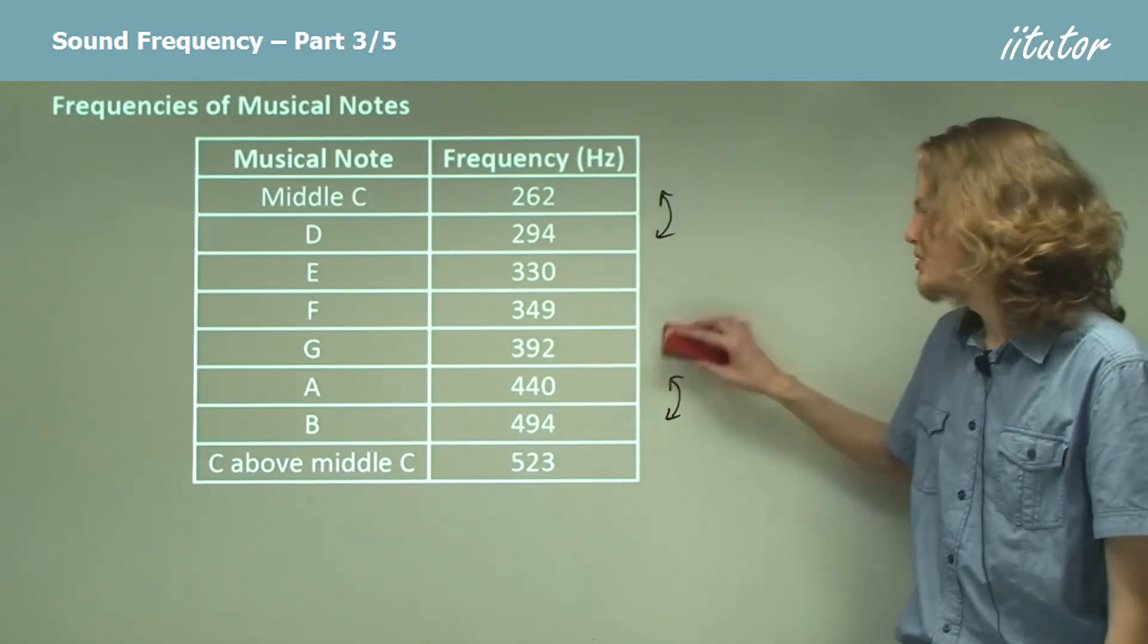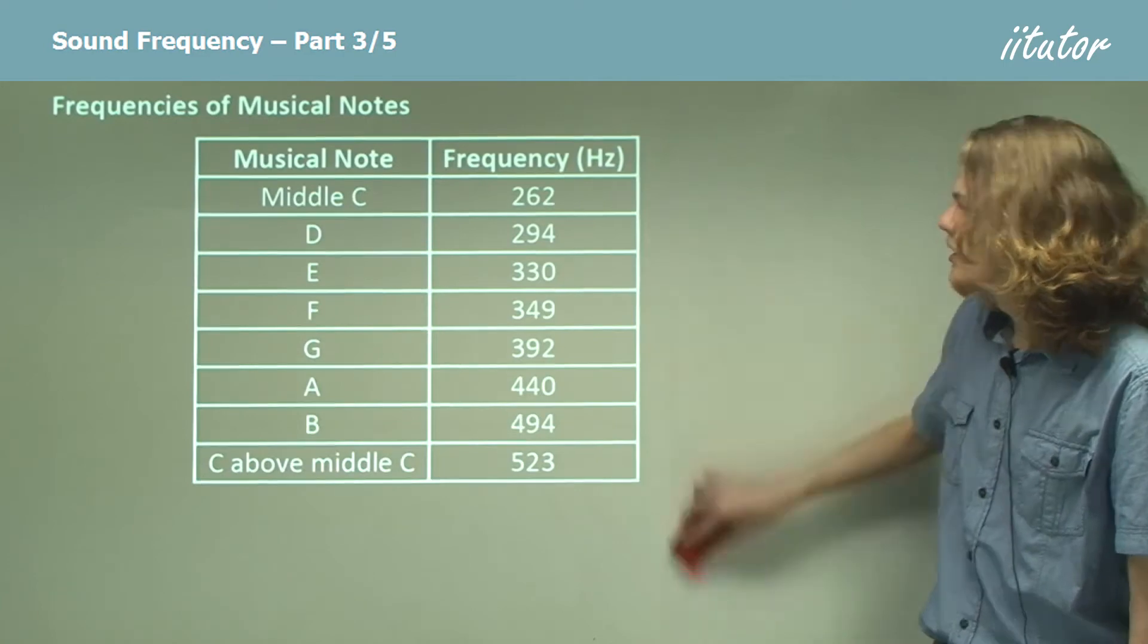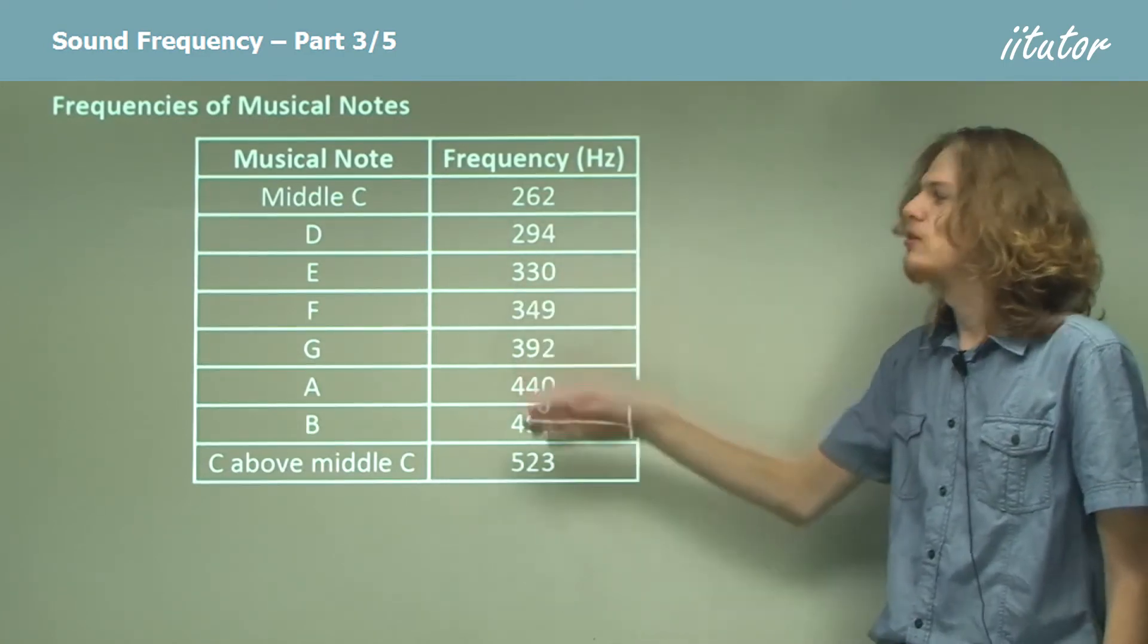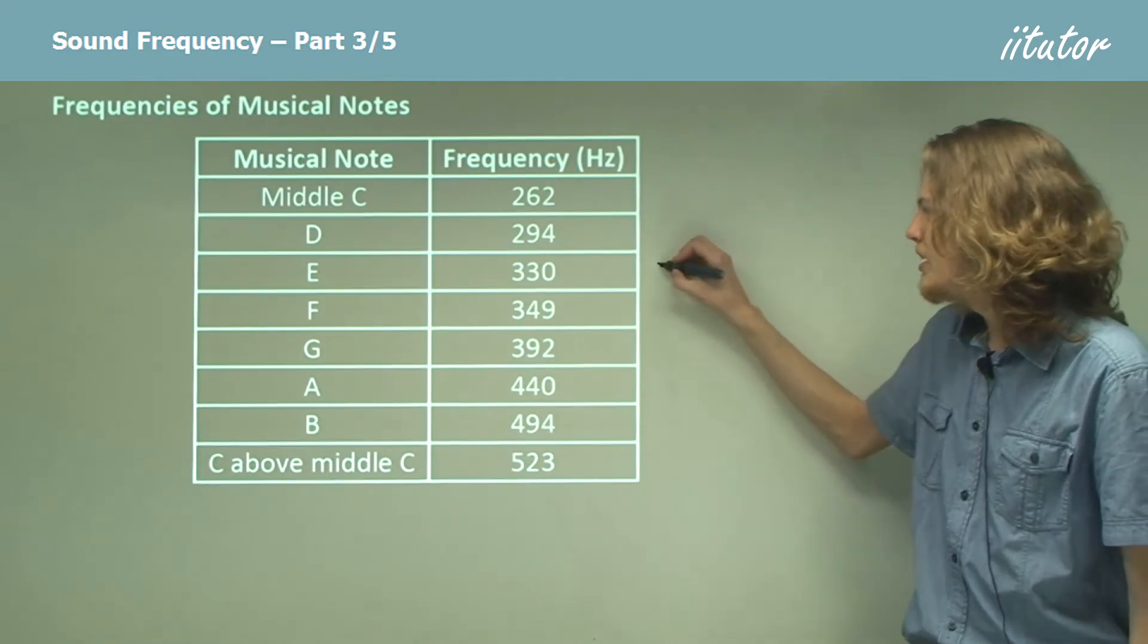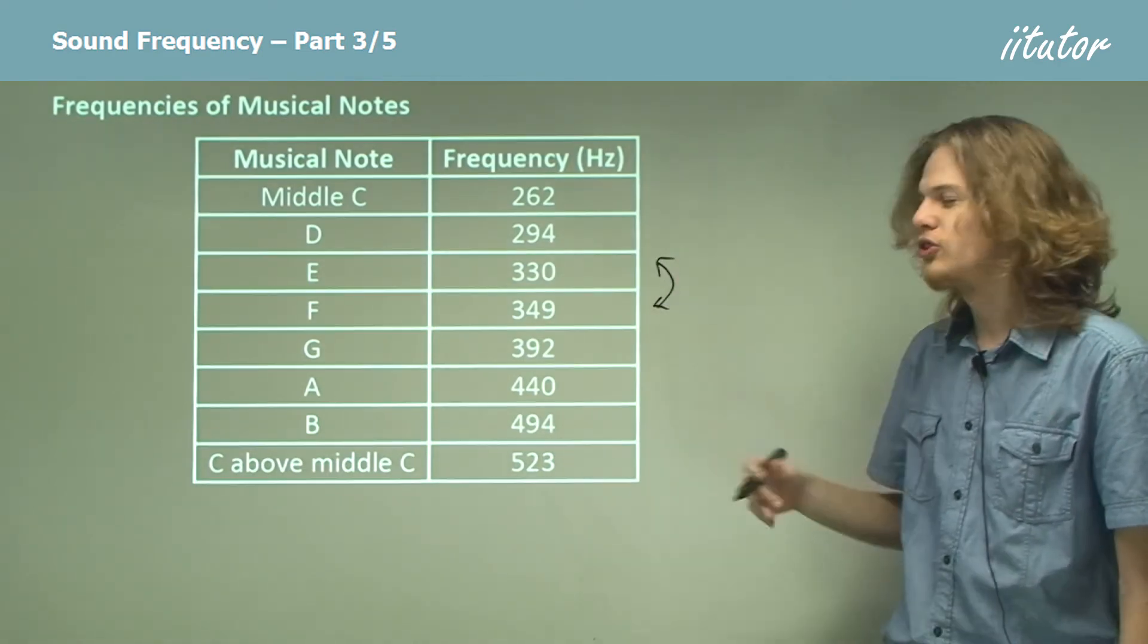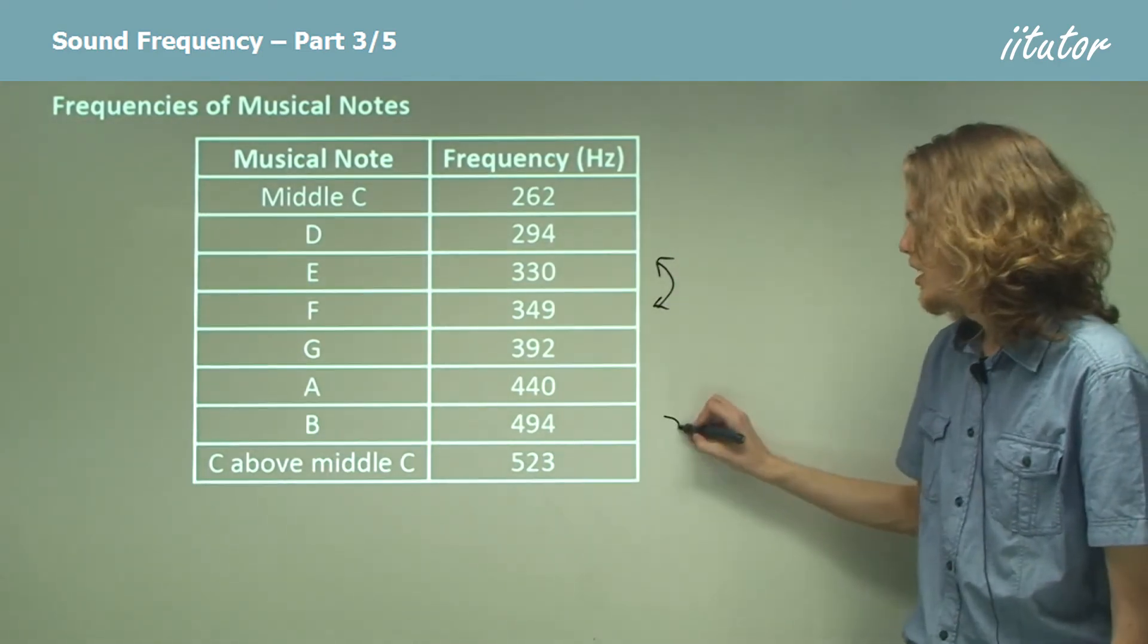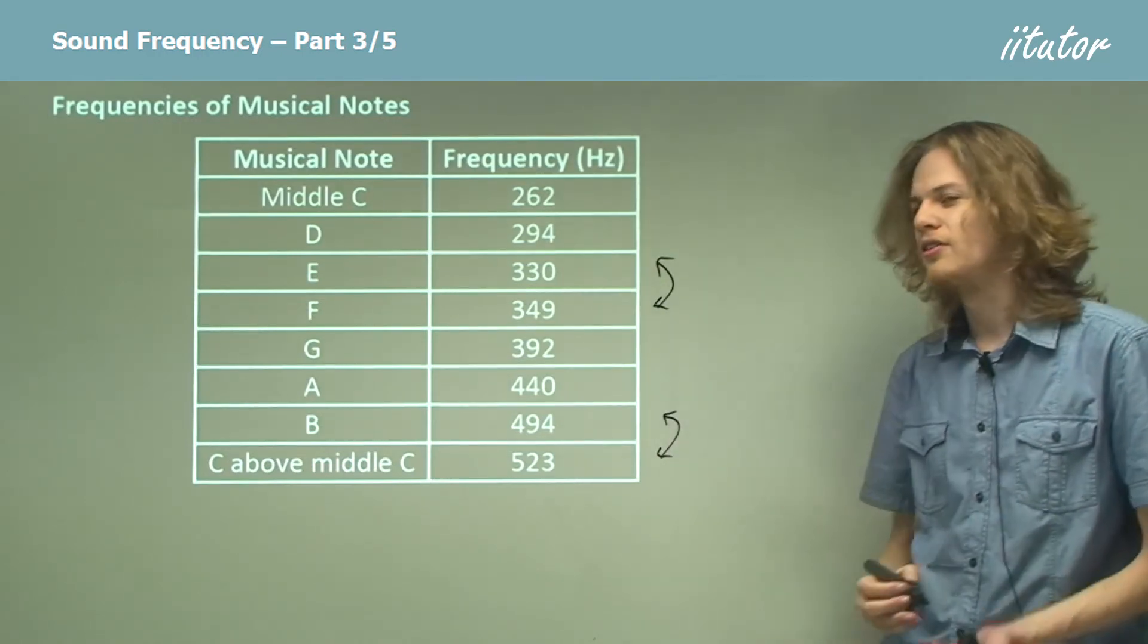It's also interesting to notice that even accounting for that, not all of these notes in the scale are the same distance apart. In particular, E and F are closer together than you'd expect them to be, and B and C are closer together than you would expect them to be.